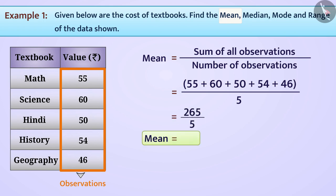The answer is 53. Let us also try deriving the range of this data by subtracting the smallest observation 46 from the largest observation 60. The range comes out to be 14.